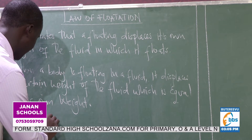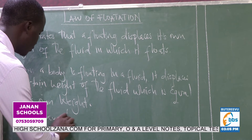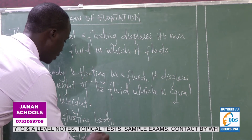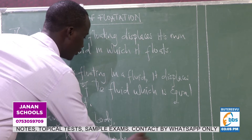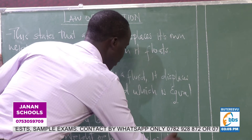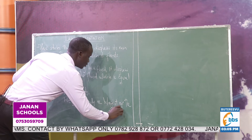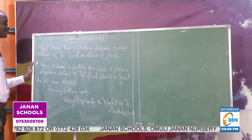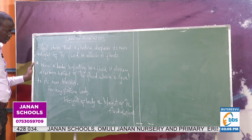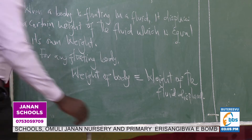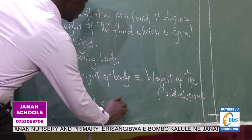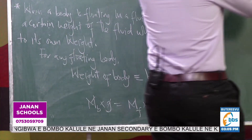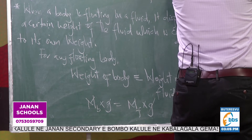Mathematically, we are saying that for any floating body, the weight of the body is equivalent to the weight of the fluid displaced. If I bring in the mathematical definition of weight as mass times acceleration due to gravity, then the mass of the body times g must equal the mass of the fluid displaced times g. The g's cancel out, and therefore the mass of the body is equivalent to the mass of the fluid displaced.